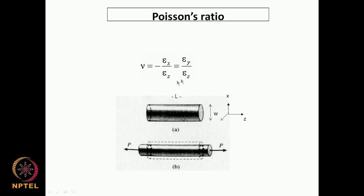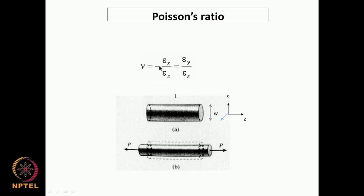Another important term is called the Poisson's ratio. Suppose you have a rod and you are pulling the rod by applying forces in either direction; obviously there will be a strain — an elongation of the rod — and simultaneously in the other direction there will also be some change because of the elongation. That ratio is called the Poisson's ratio. When you pull the rod, there will be an elongation — an increase in its length — and simultaneously in the perpendicular direction, there will be a decrease in the diameter. There is a negative sign here because when you have elongation in one direction, there will be a reduction in the dimension in the perpendicular direction.